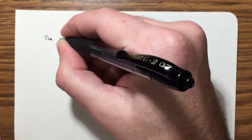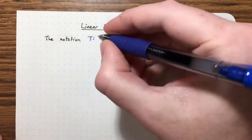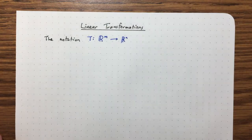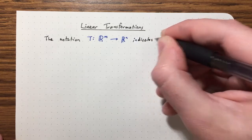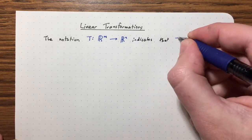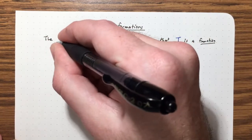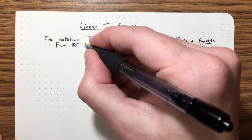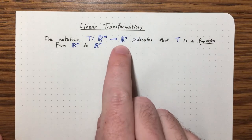So I'm going to use a notation. We're going to call a transformation T, and say that it's going from Rᵐ to Rⁿ. This indicates several things: T is a function or transformation from our domain Rᵐ to the codomain Rⁿ. And Rⁿ is not the range — Rⁿ is the codomain. So let me talk about that really quick.